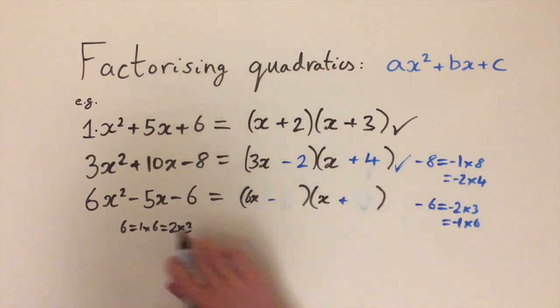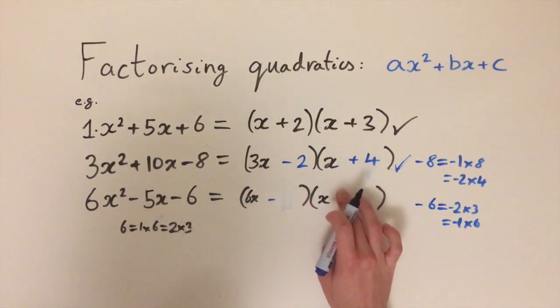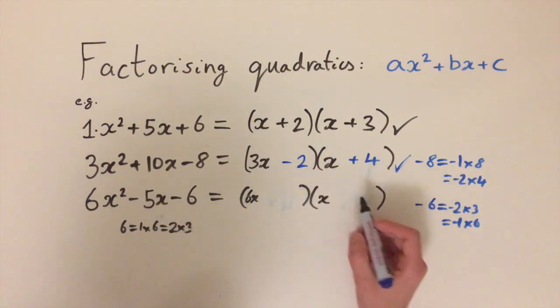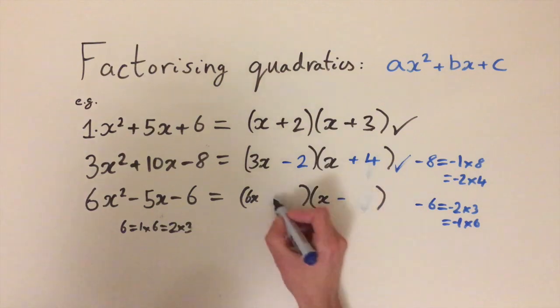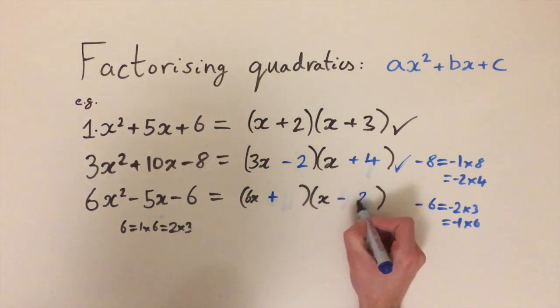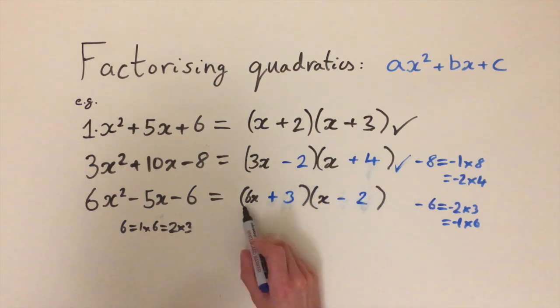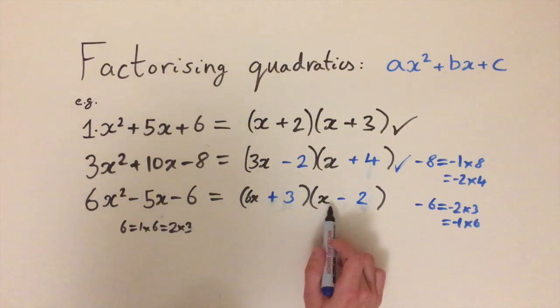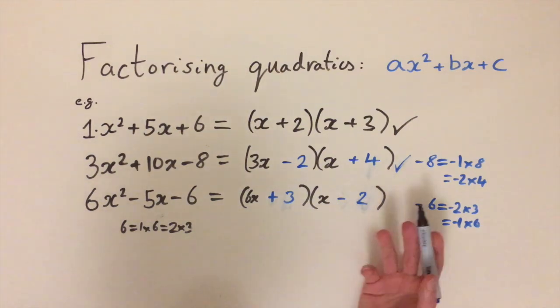We actually need a negative value of x. So what if we try the minus sign on this side and the plus side on this side? So we can do minus 2 plus 3. Then we'll get minus 12x, 6x times minus 2 minus 12x plus 3x, that gives us minus 9x.